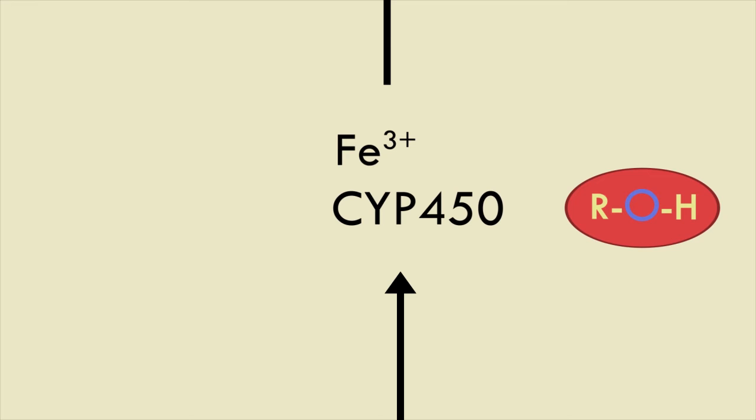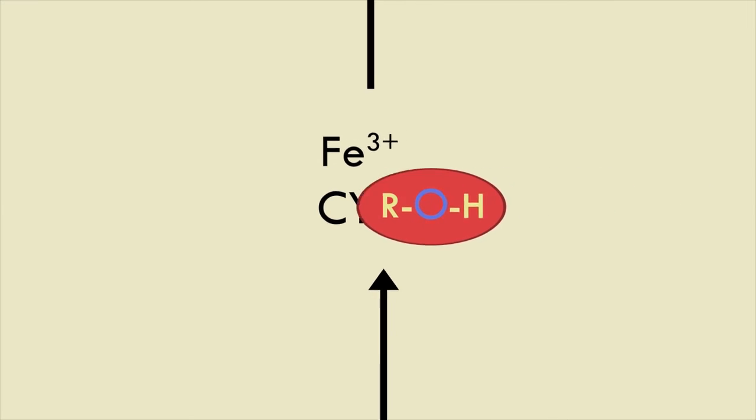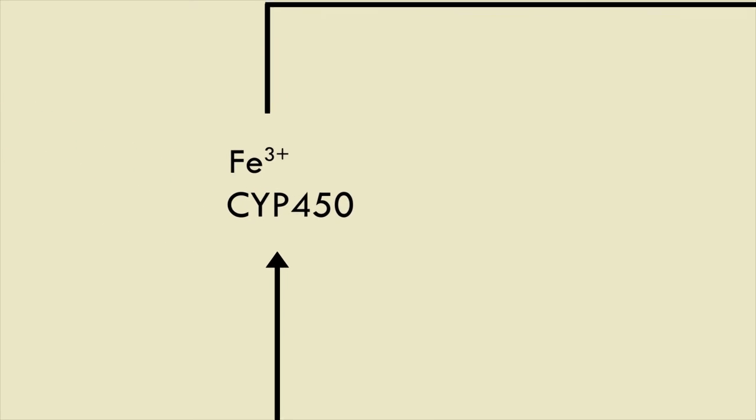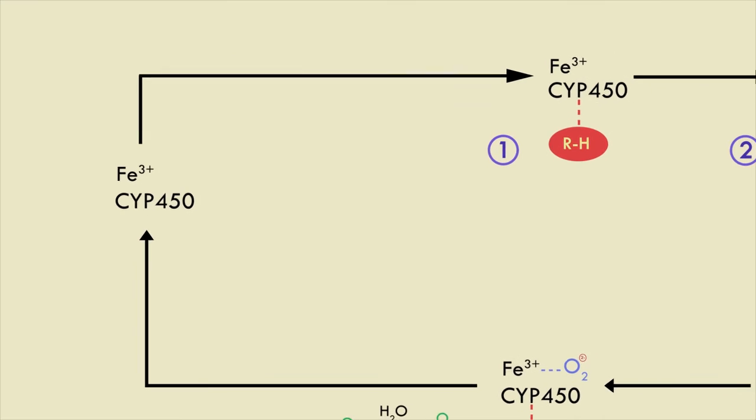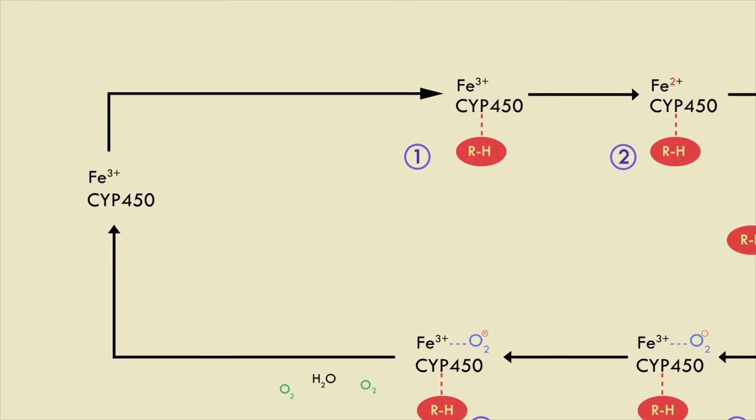the enzyme is able to release the metabolite, the product ROH. Once ROH gets released, we are left with the original CYP450 enzyme in its default ferric state. So now the enzyme is ready to begin the cycle all over again.